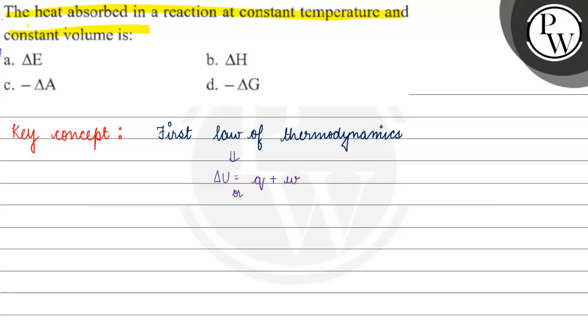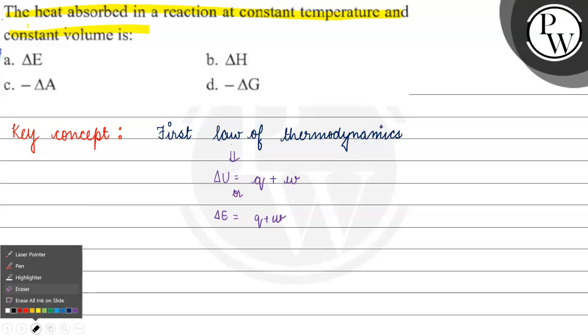Delta E is basically equals to Q plus W. Here, Q is basically heat absorbed or gained, and W is work done by the system or on the system, right?